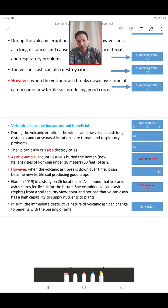Volcanic ash can be hazardous and beneficial again. Then we have A1 and A2. But please, everybody, notice that here I also want to include some examples. But I don't have any examples for A1.